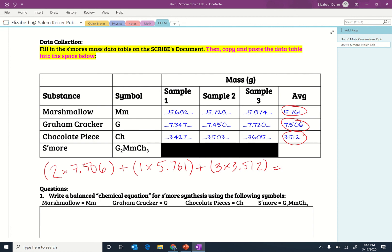Plus three times 3.512. Oops, made a typo, of course, as I'm trying to do this. Okay, so two times 7.506 plus the marshmallow mass, plus three times 3.512. And we get about 31.31.